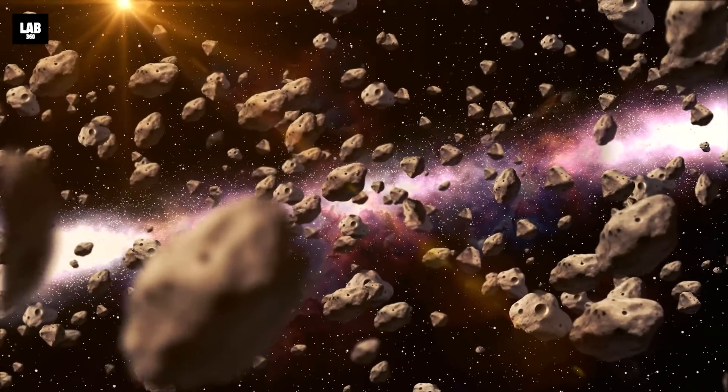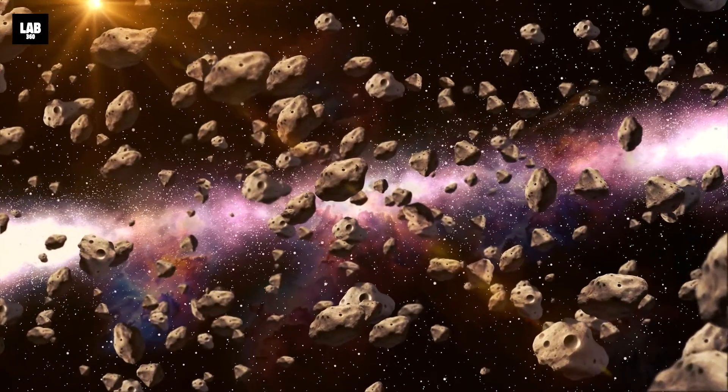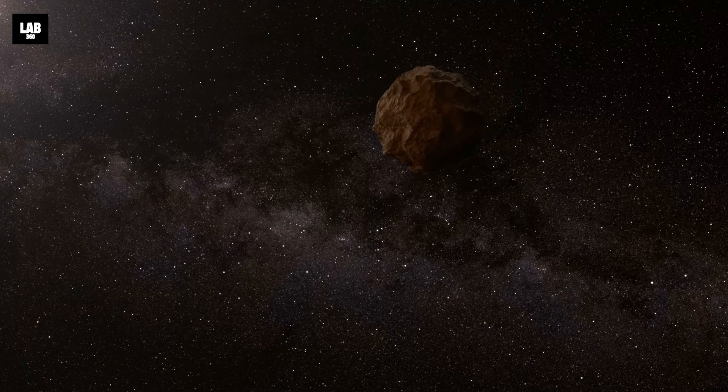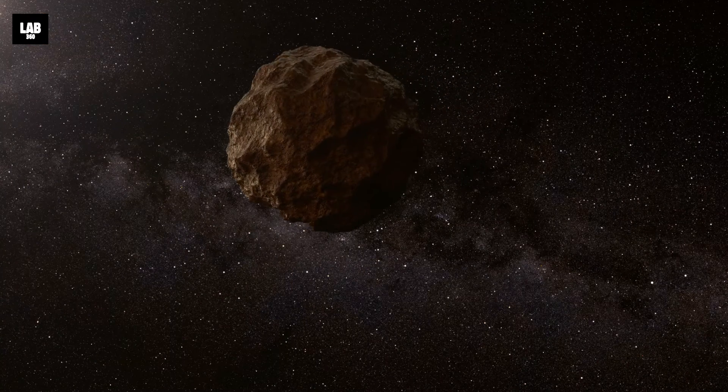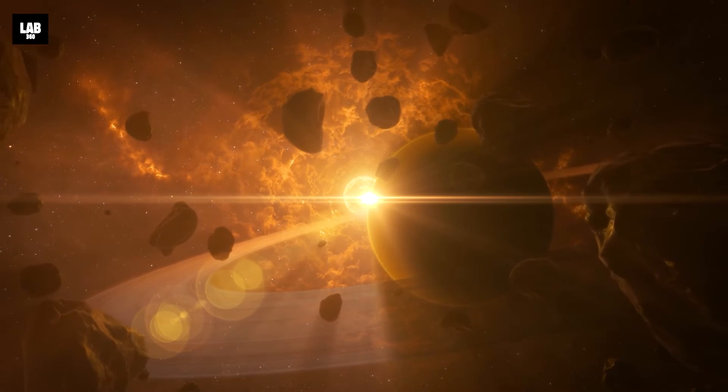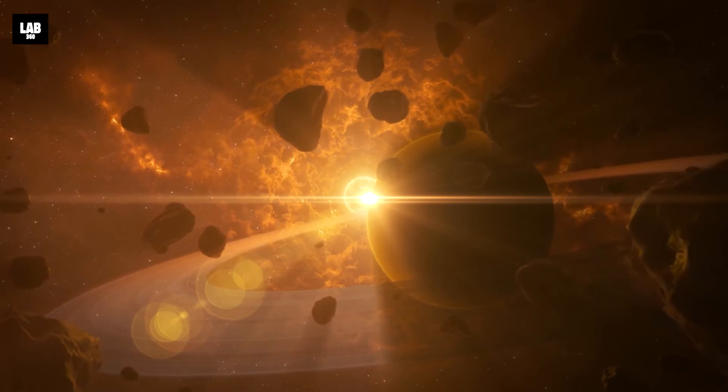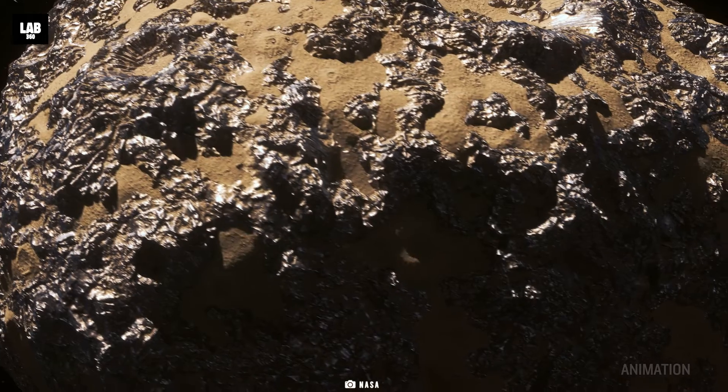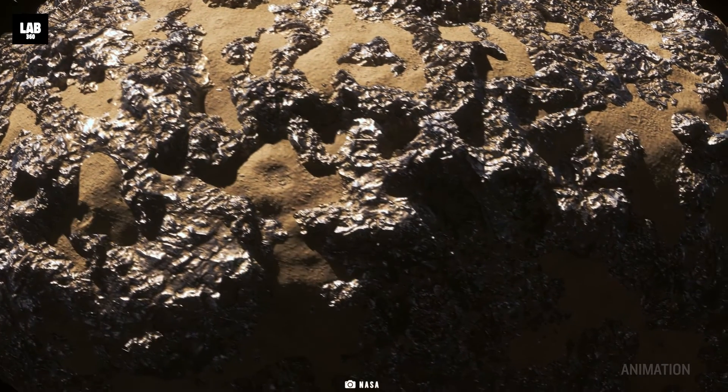These leftover remnants from the early formation of our solar system are also known as minor planets or asteroids. Currently, there are about 1.3 million known asteroids, and the study of asteroids will help scientists determine the formation of our universe.